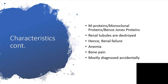There will be formation or production of M-proteins, that is monoclonal proteins, or Bence Jones proteins. Renal tubules are destroyed, hence there will be renal failure. There will be anemia, and of course bone pain, particularly with osteolytic lesions. It is mostly diagnosed accidentally — because a patient feels disabled and weak, visits the clinic, a complete blood count is done, anemia is found, and further investigations lead to this diagnosis.